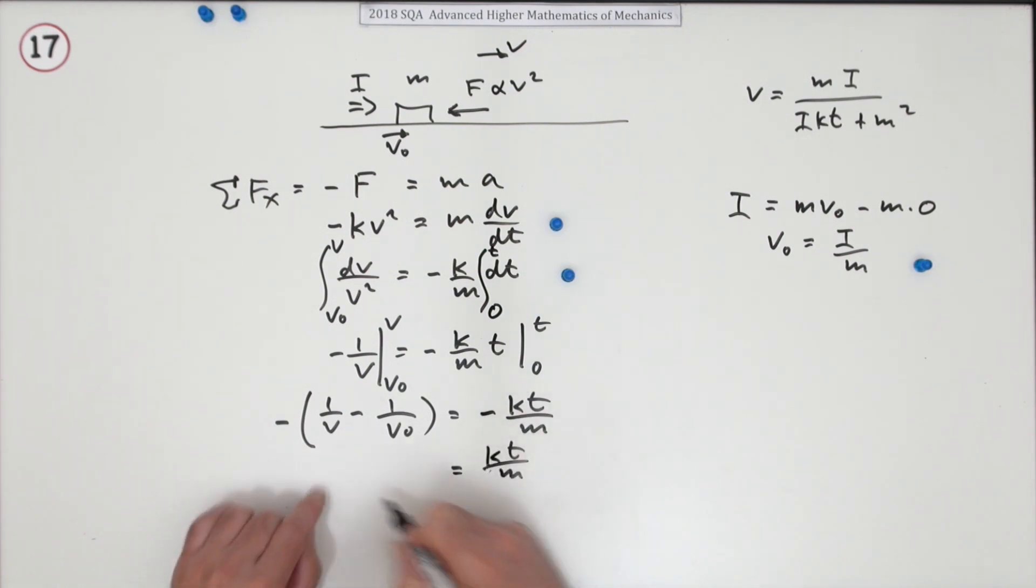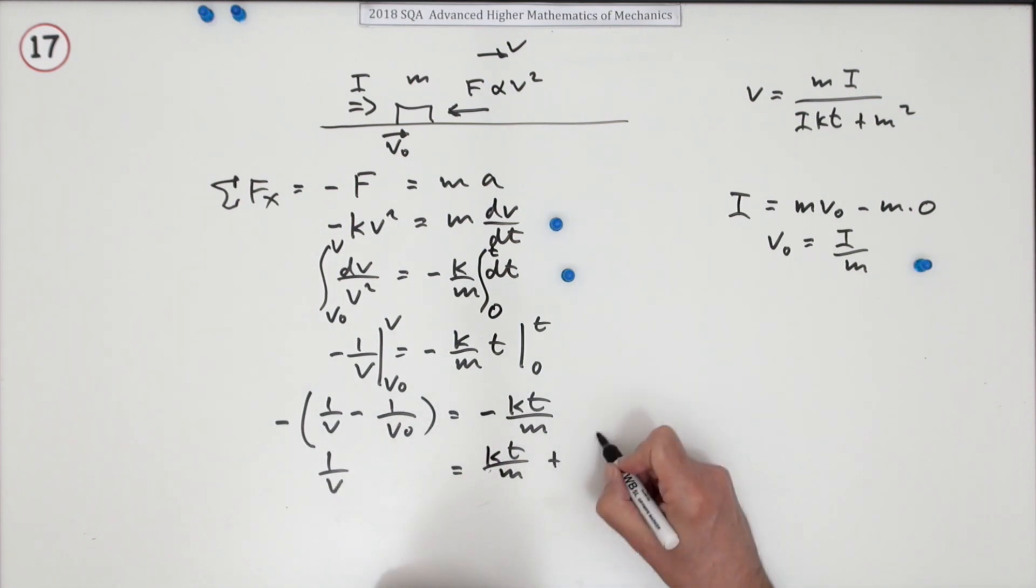K T upon M. Now so that's 1 upon V. 1 upon V0 is 1 upon I over M. It's minus it, so if I take that across, it'll be plus 1 over I over M. So the I's still at the bottom. So it'll be M upon I.